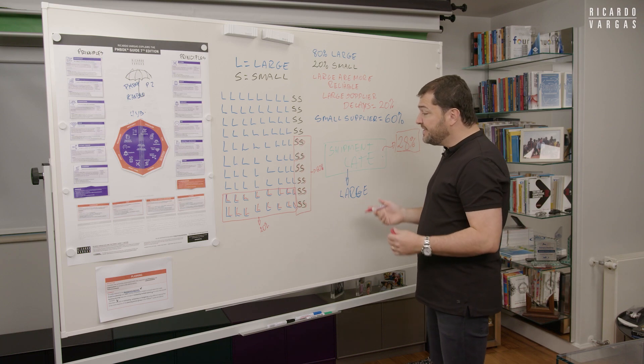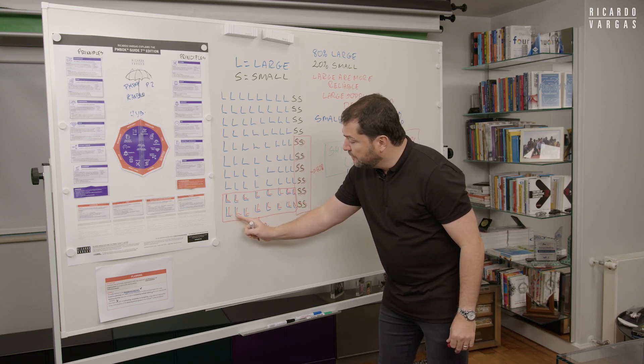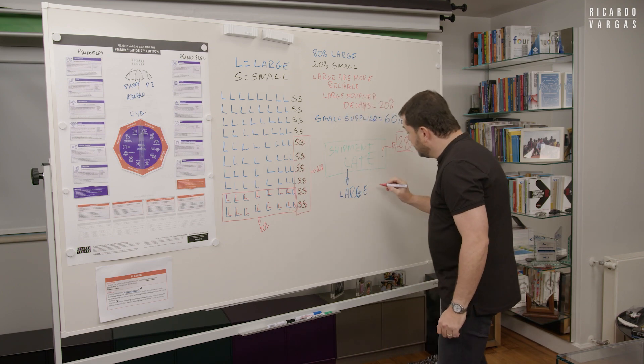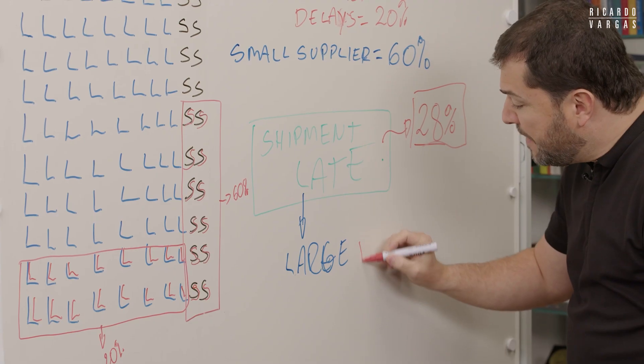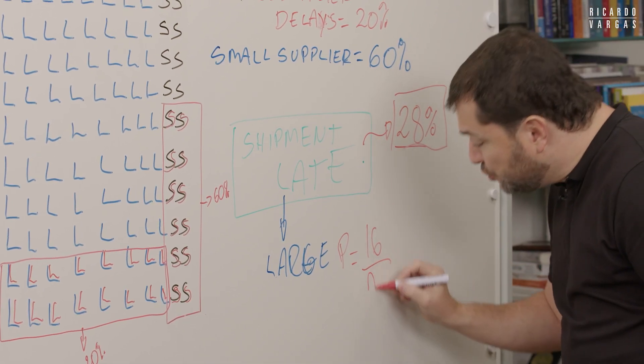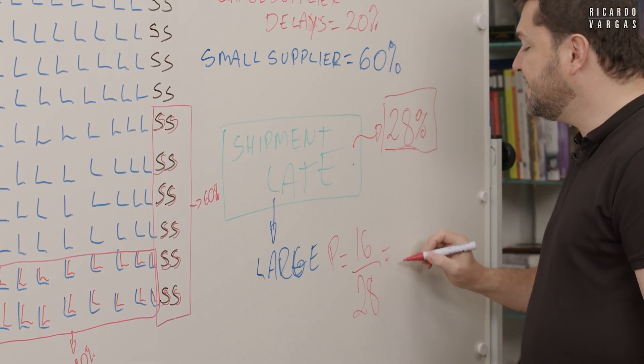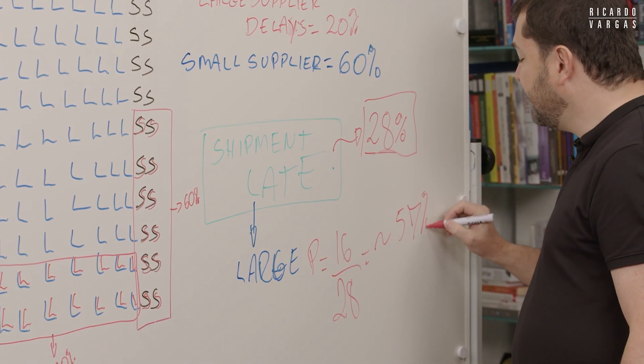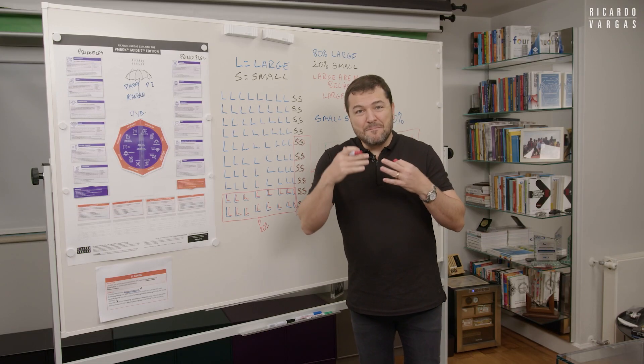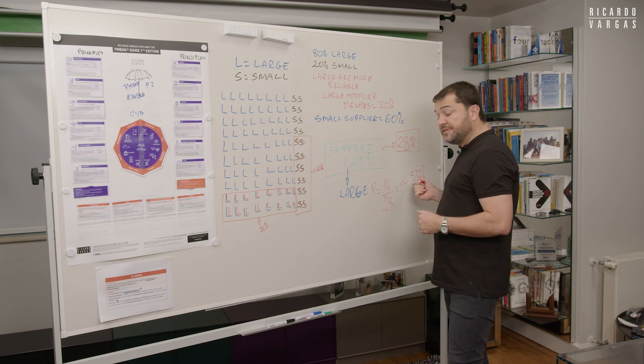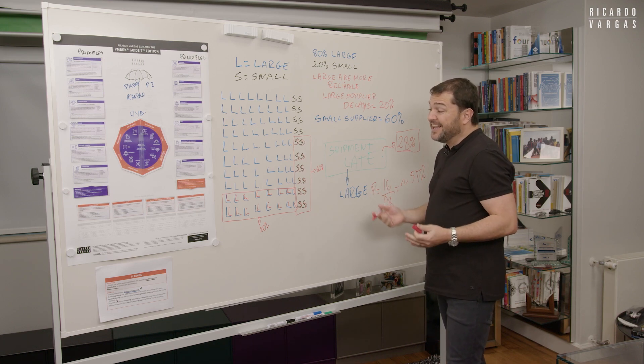Large. So what I need, I need to count the large. 2, 4, 6, 8, 10, 12, 14, 16. So the probability is 16 out of 28. This is, I would say around 57%. So there are a little bit more than 50% to be a large company.